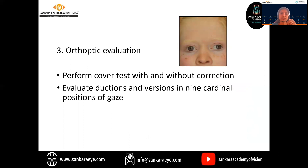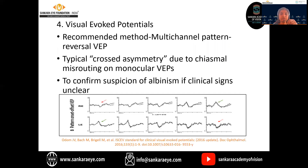For orthoptic evaluation, cover tests need to be performed with and without correction to look for strabismus. We have to evaluate ductions and versions in all nine cardinal positions of gaze. For visual evoked potential, the recommended method is multi-channel pattern reversal VEP, which gives accurate results. The typical crossed asymmetry, as discussed, will indicate chiasmal misrouting on monocular VEP. This is done if there is a suspicion of albinism and in children where clinical signs are unclear.